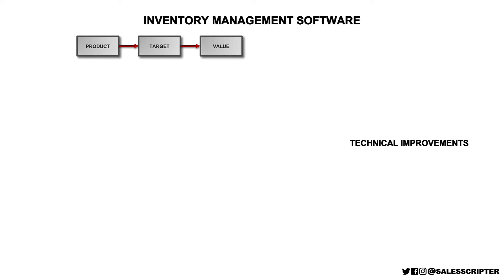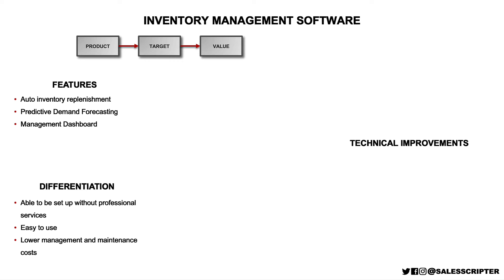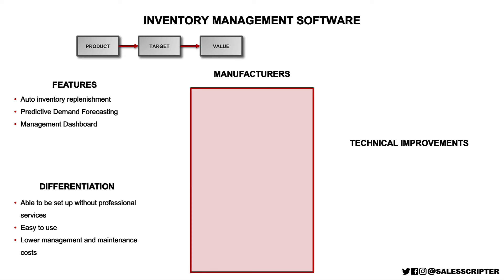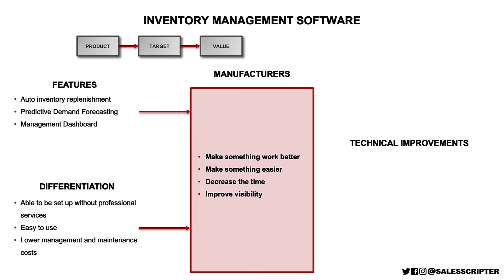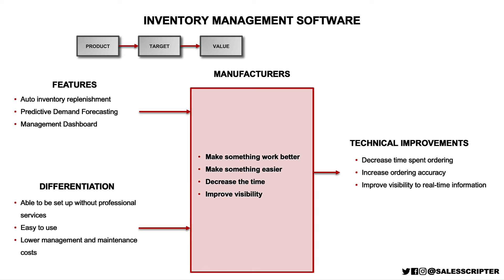If we start with thinking about technical improvements, we can bring back the features and the differentiation that we just brainstormed. We want to keep in mind the target audience for the sales message that we're creating. And we can look at our features and our differentiation and think about: do any of these help to make something work better, help to make something easier, decrease the time it takes to do something, or improve visibility and access to information? We can look at these one at a time, and if any of these do help in those areas, we can start to compose a few thoughts as to how it does that. So our inventory management software can help to decrease time spent ordering, increase ordering accuracy, and improve visibility to real-time information.